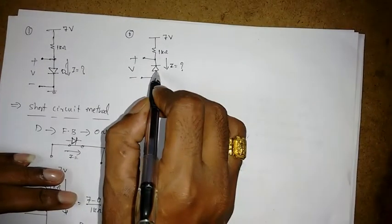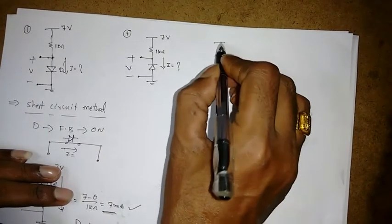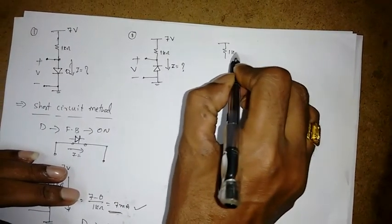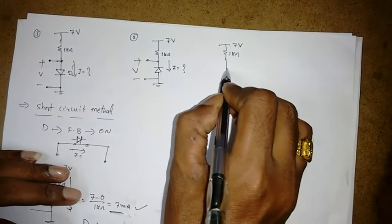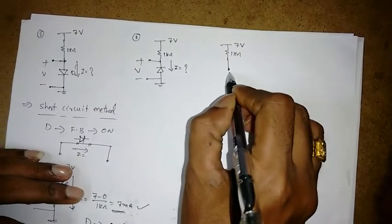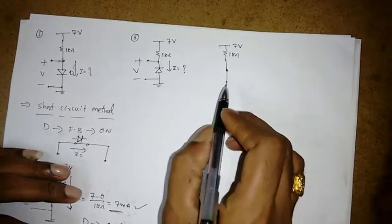Now similarly for the second circuit. Again assume the diode is in forward bias. So the equivalent model will be like this. 7 volt. So this is like this.